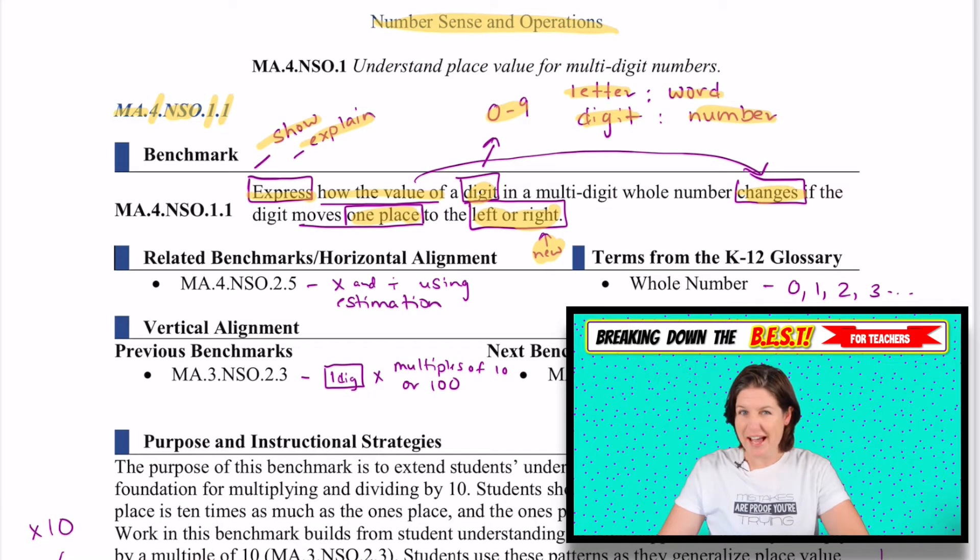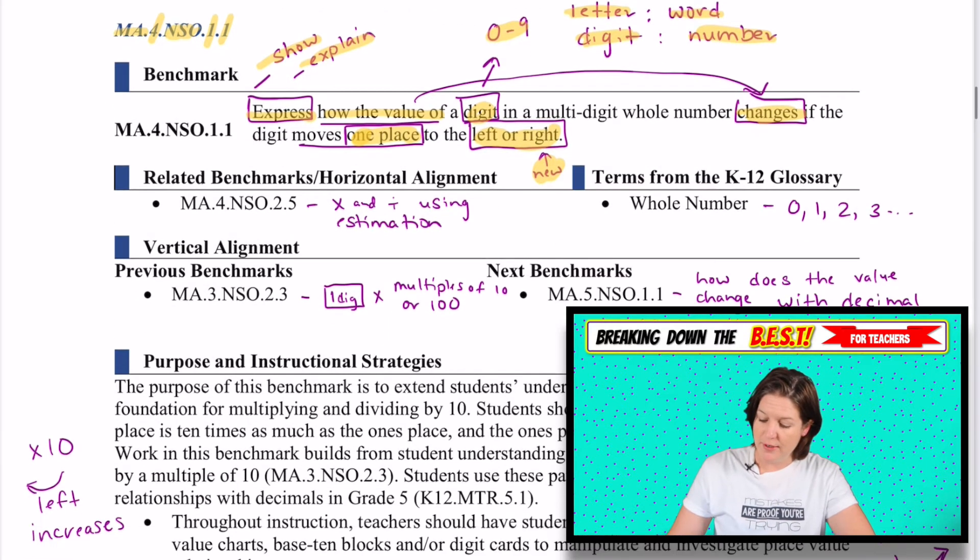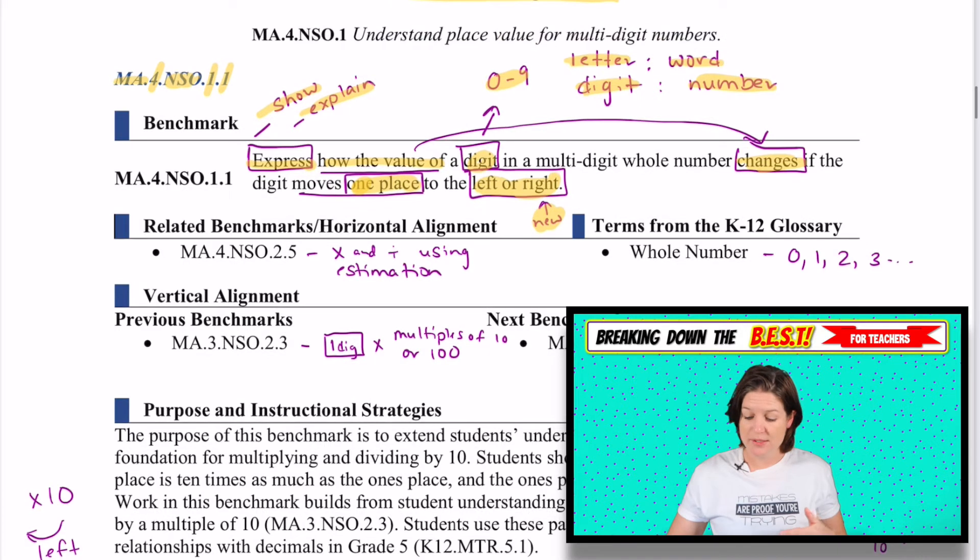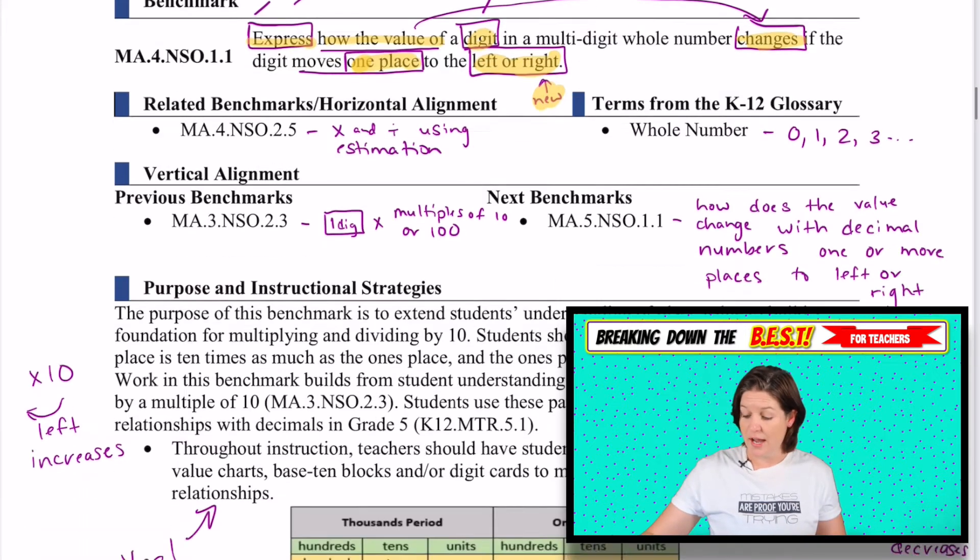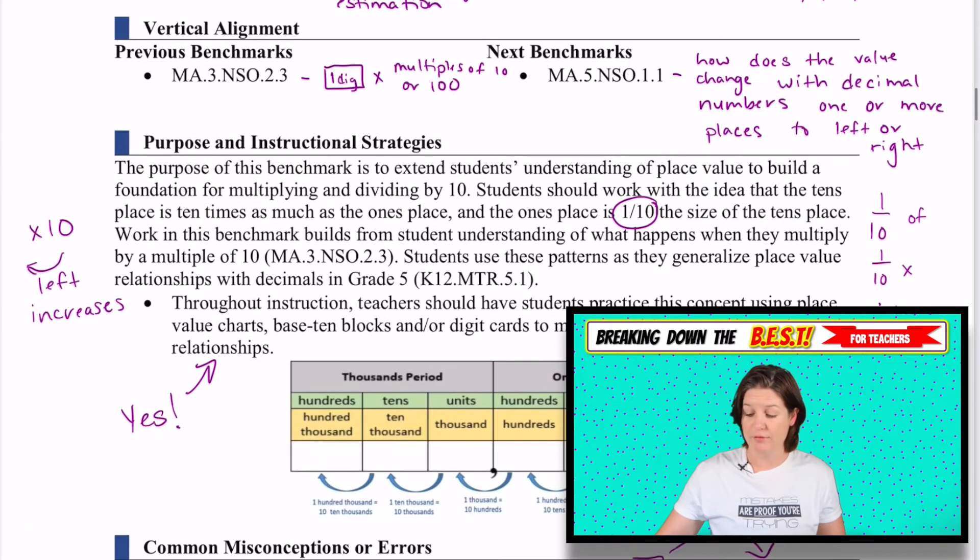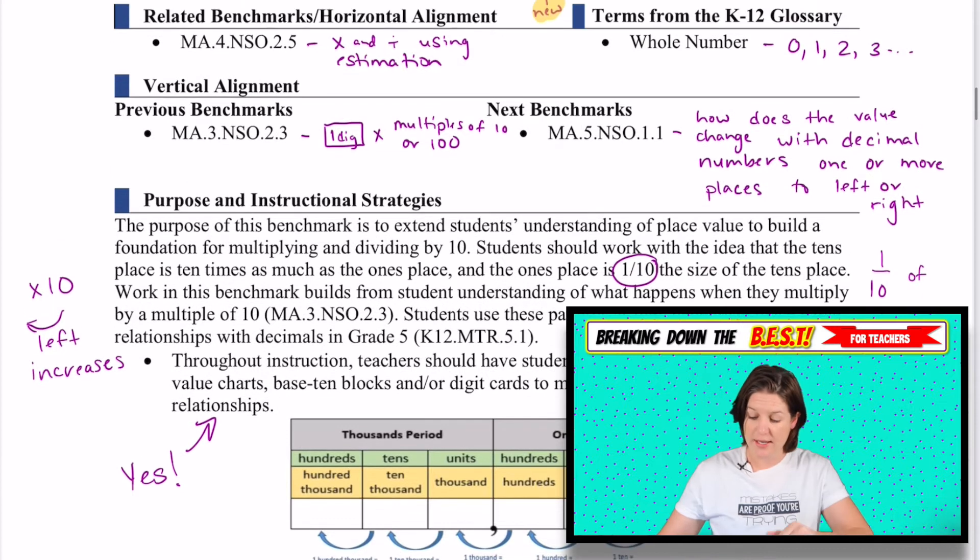Coming from those common core standards that we used in Florida, the old standards called for students to identify the values when it was shifted to be 10 times more. But now we're going left and right. So that means our digits will be 10 times more or 10 times less. Be careful here because I have seen some other resources floating out there where they're talking about it being 10 or 100 times more. But you can see here, we're only going one place. So it should be only 10 times more or 10 times less.